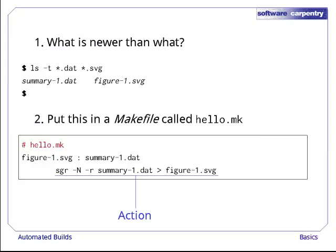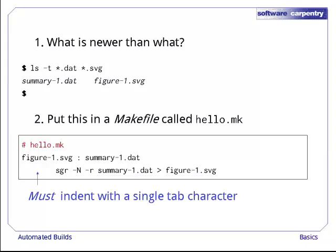This tells make what shell command or commands to run to bring the target up to date if it is older than any of its prerequisites. This rule only has one command, but a rule can contain any number. One thing to note is that the actions in rules must be indented with a single tab character. Make will not accept spaces or mixes of spaces and tabs. As we said in the introduction, it was written by a summer intern in 1975, and sometimes that shows.